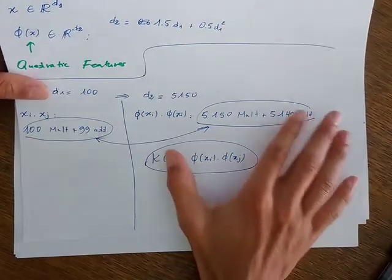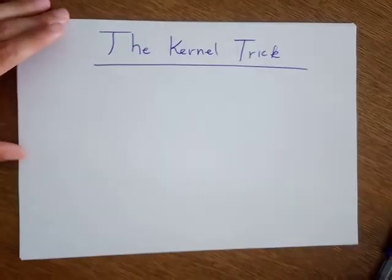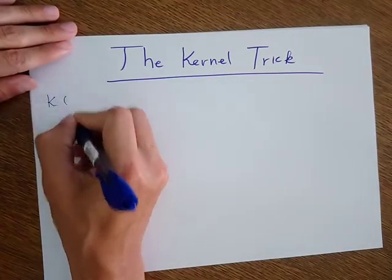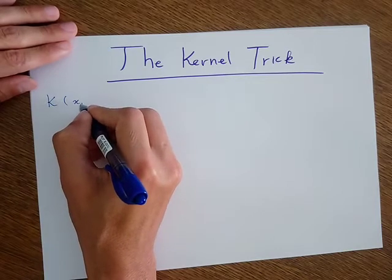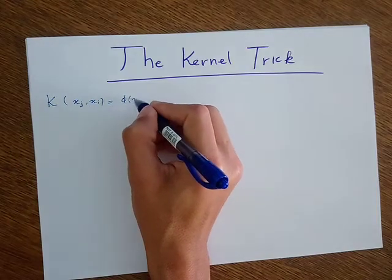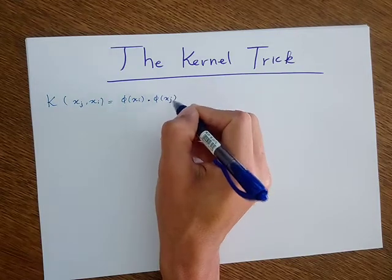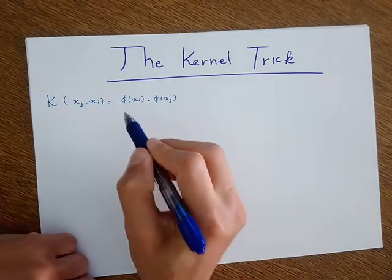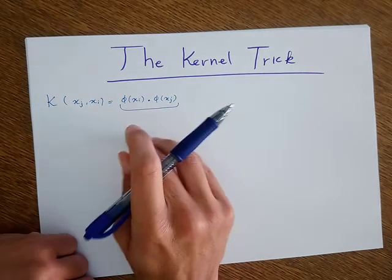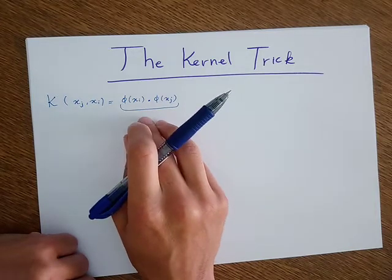To avoid that problem, we define something called a kernel. This is what the kernel trick is about. We define a function k such that it equals phi(xi) dotted with phi(xj), and the idea is to find and simplify the expression of this dot product. When we simplify this expression, the number of operations decreases.